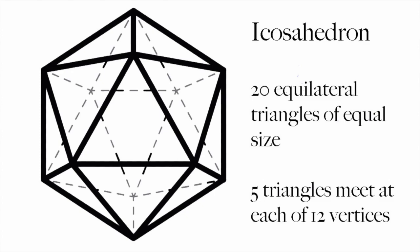Regular means that all the sides are the same shape and size. And convex means that any two points on the surface can be connected by a line that doesn't cut through the surface.